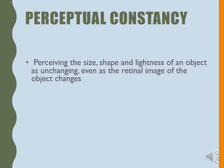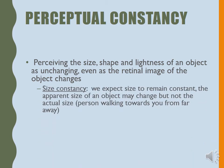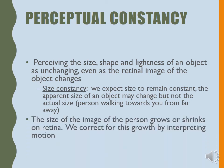We have perceptual constancies — things we determine to be constant in our world: size, shape, and the color or lightness of an object. Size constancy — if you're walking down the hall, I don't assume that as you get closer you're magically growing in size. I imagine that if you're a five-foot-seven woman at the end of the hall, you're still going to be five-foot-seven when you get closer to me. The size of the image of a person grows or shrinks on the retina, but we correct that interpretation — we just notice that it must be an indication of motion.